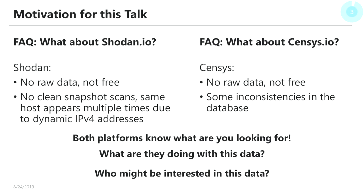What is the motivation for this talk? How do you set up an infrastructure for scanning the internet repeatedly? My problem was that Shodan.io does not provide raw data for free. As a researcher, you want raw data because you cannot be sure the data isn't incomplete or manipulated. Also, Shodan does not provide clean snapshots — they scan but never delete old results, so dynamic IP addresses appear multiple times in the database, meaning you have no clean data.